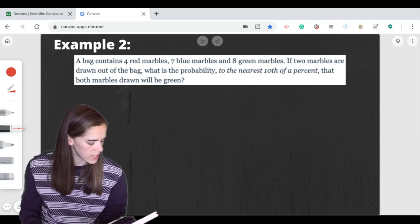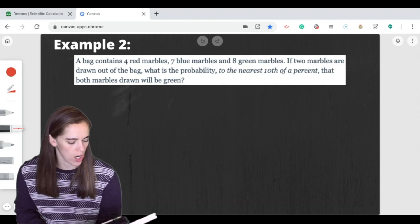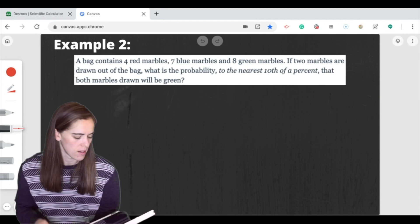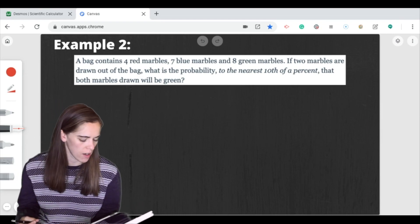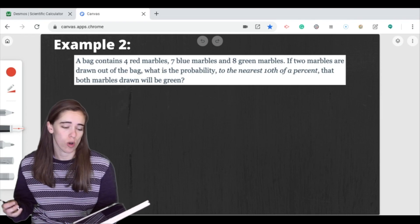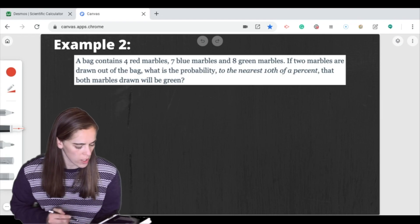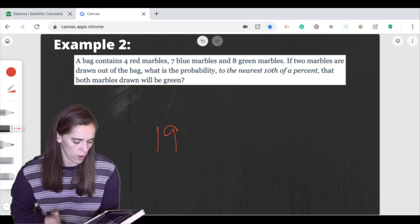All right, let's take a look at number 2. This one says a bag contains 4 red marbles, 7 blue marbles, and 8 green marbles. If 2 of them are drawn out of the bag, what is the probability to the nearest 1,000th of a percent that both marbles drawn will be green? So here we're going to do the same idea. First, I need to find how many total possibilities I have. So I know that 8 plus 7 is 15, plus 4 more makes 19. So I have a total of 19 possible outcomes.